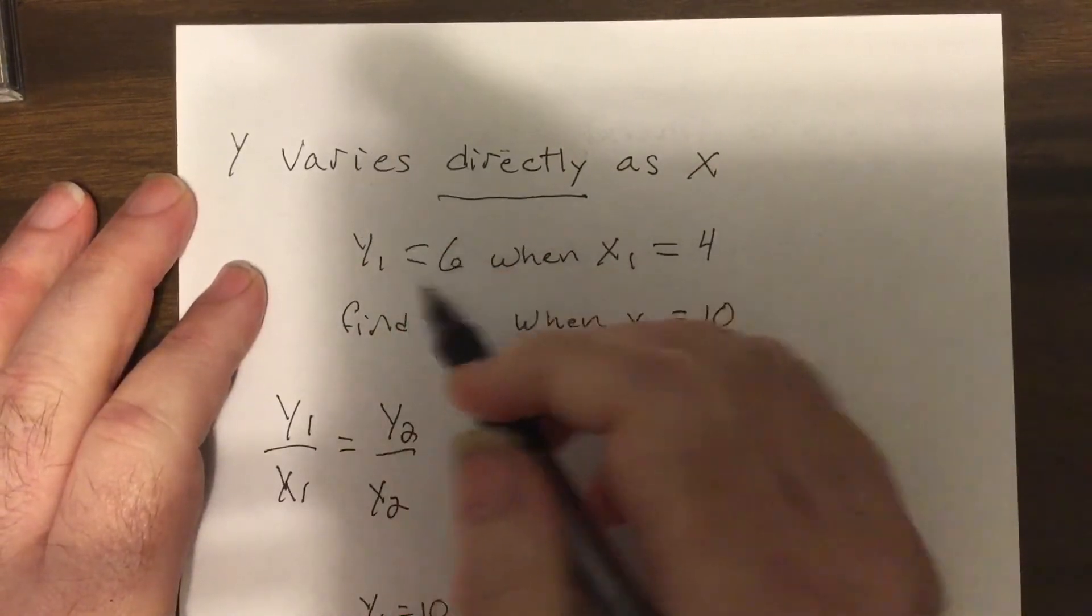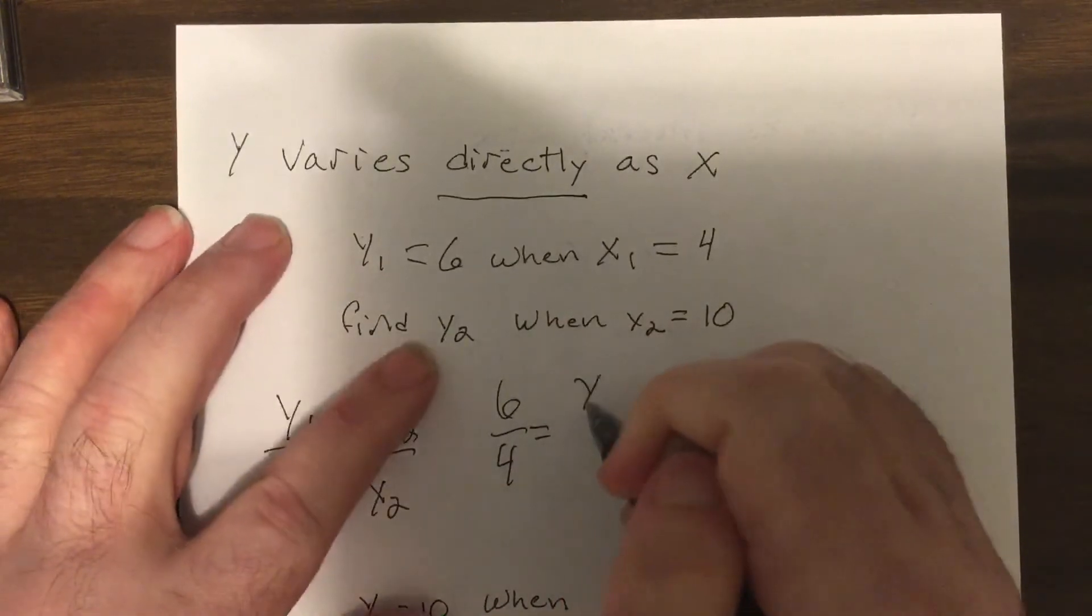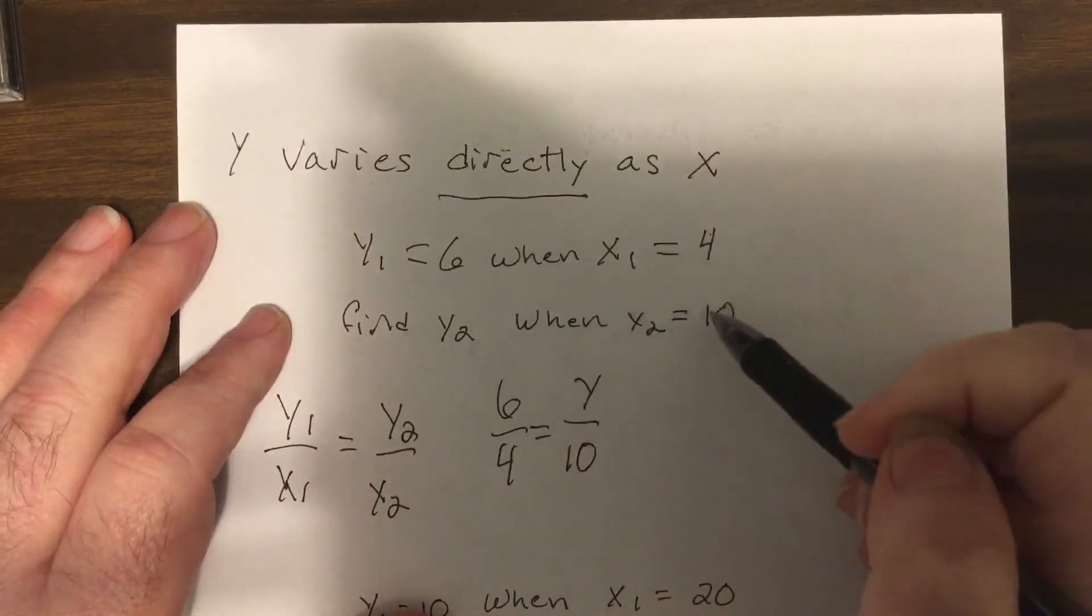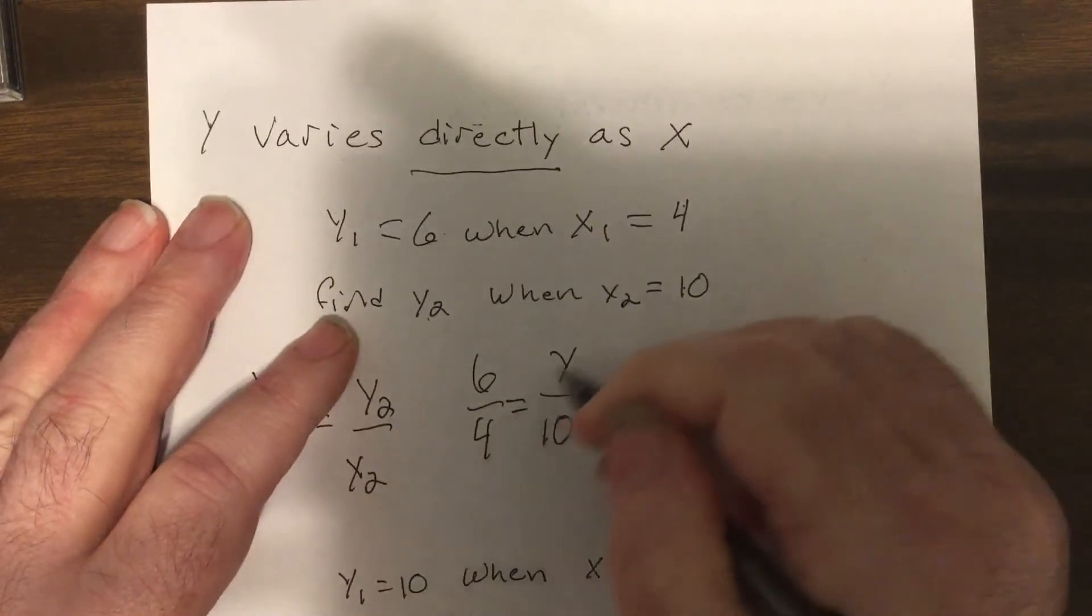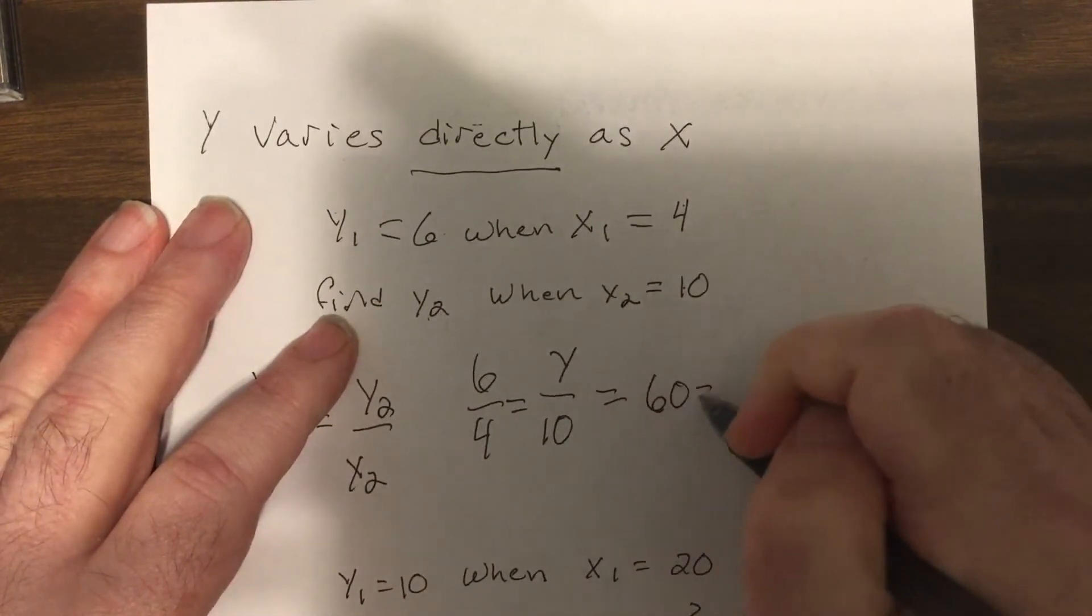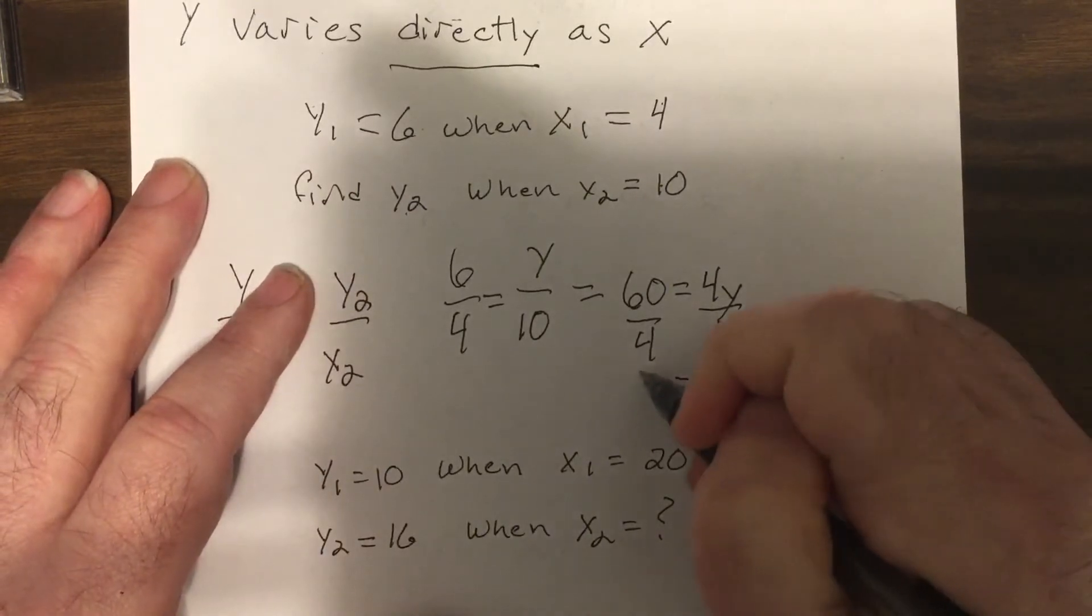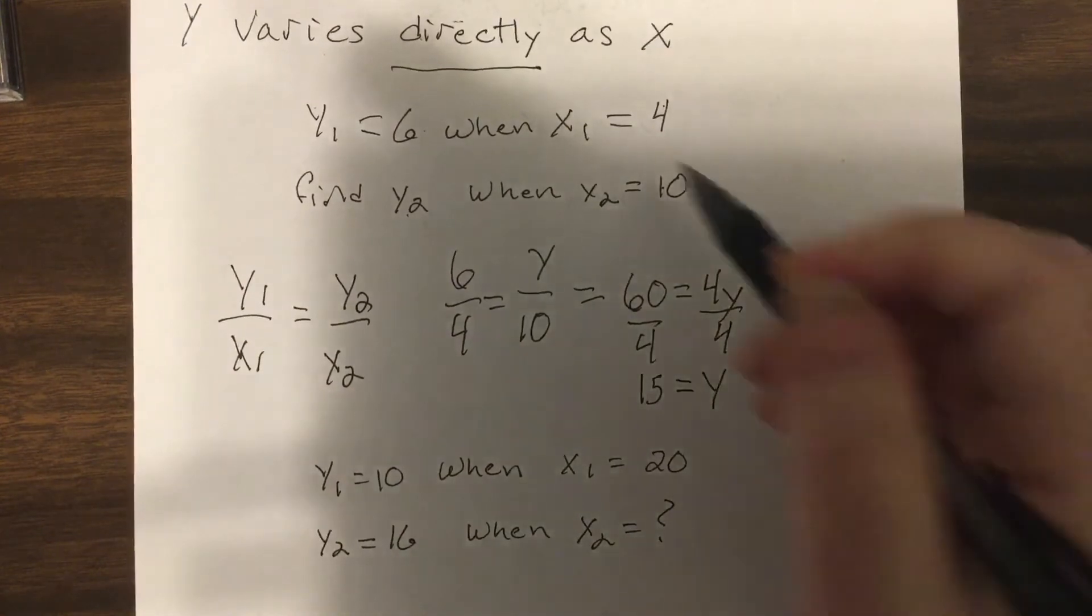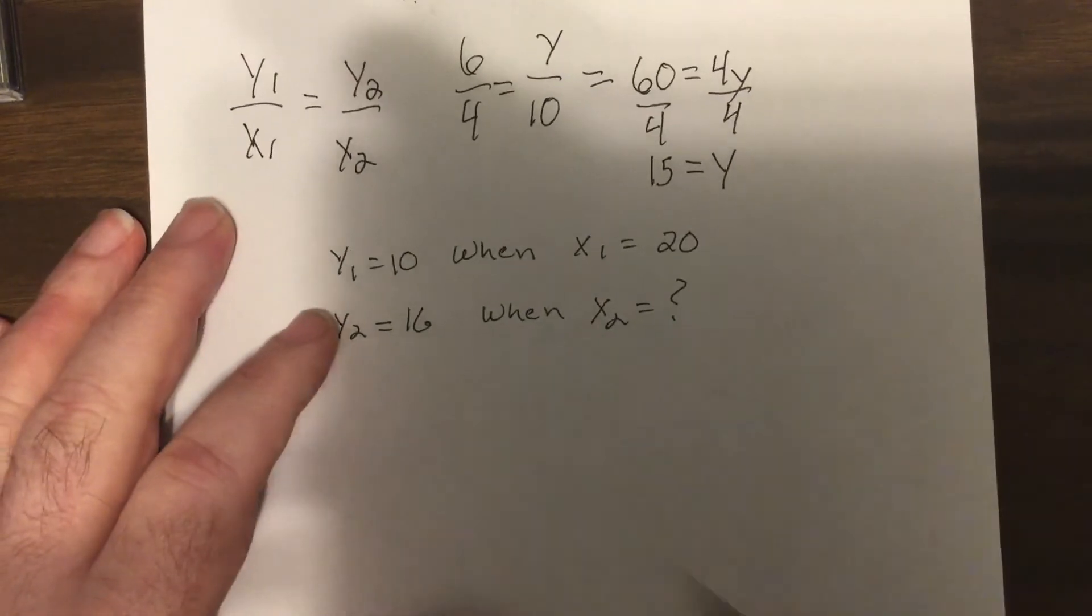In this case it's just letters, so we go 6 to 4 is y, don't know, y is to 10. Now notice x got bigger so we should expect y to get bigger because it's directly. Cross multiply, so it's 60 equals 4y. I believe it's 15. So x got bigger, y got bigger. Let's try another one.